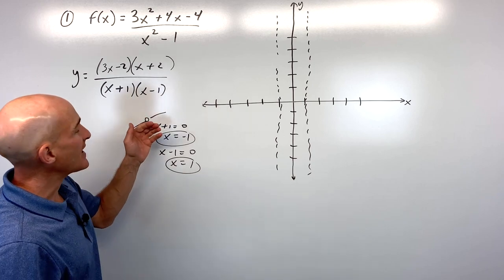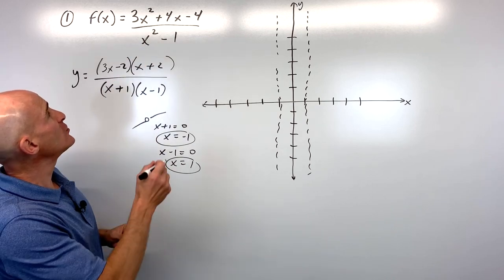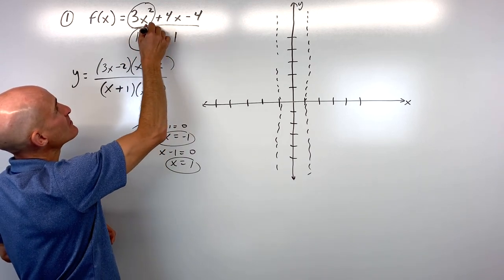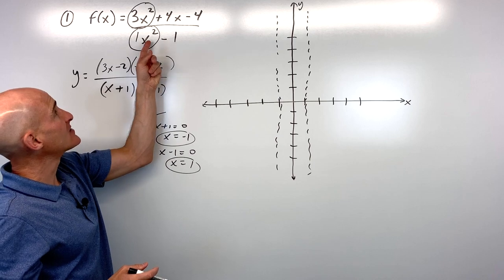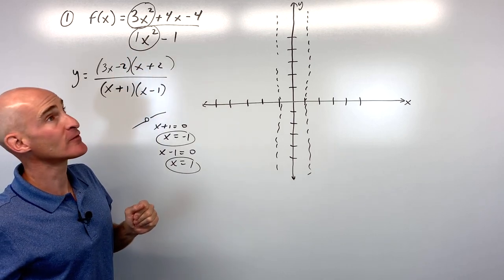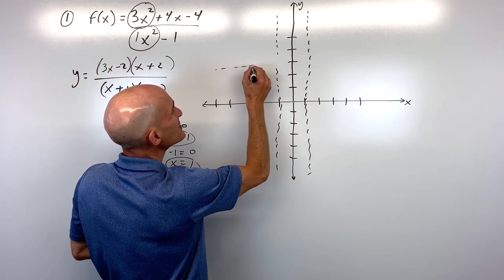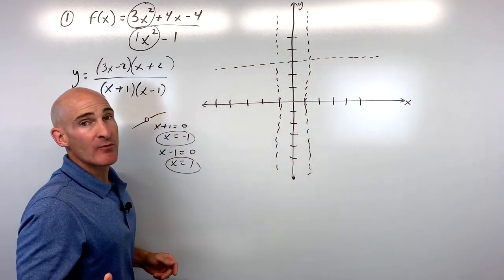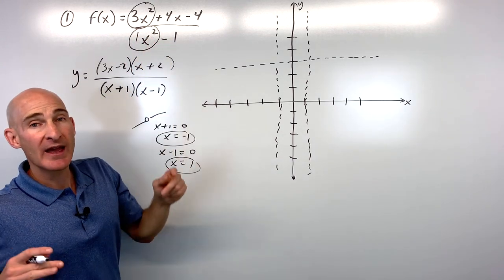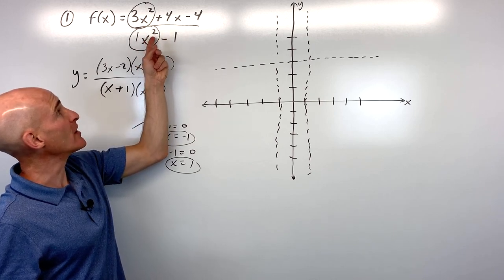The next step is to analyze whether we have a slant asymptote or a horizontal asymptote. Look at the highest-powered term in the numerator and denominator. When it's a tie — x² and x² — you get the ratio of the coefficients: y = 3/1, or y = 3. If the numerator's power is greater than the denominator's, you'll have a slant asymptote, which we'll see later. If the denominator's degree is higher, you get y = 0.